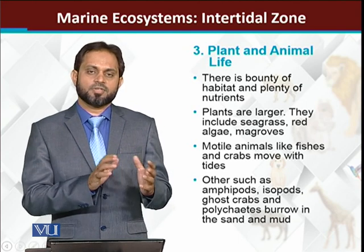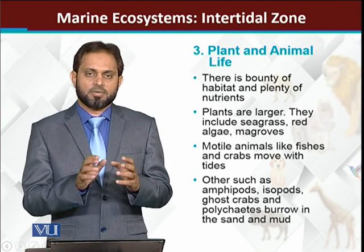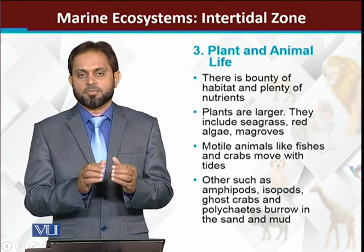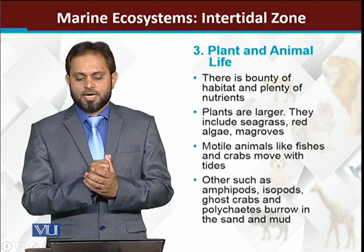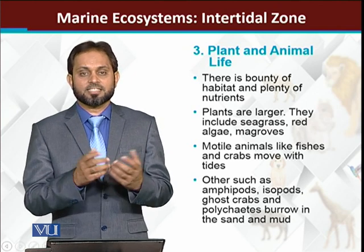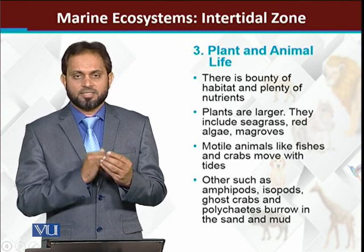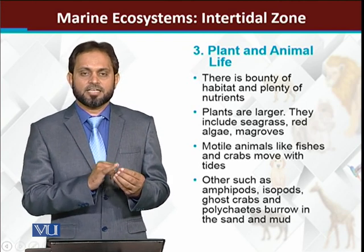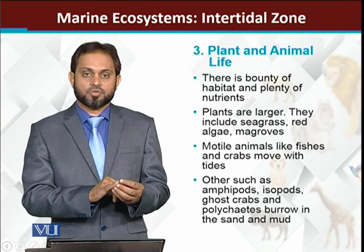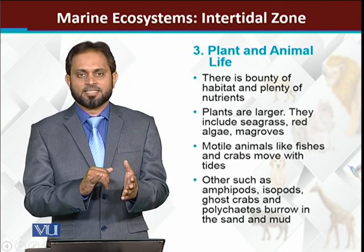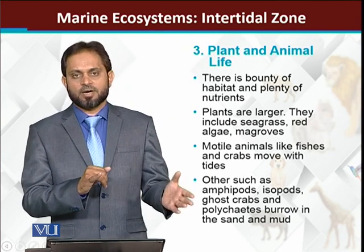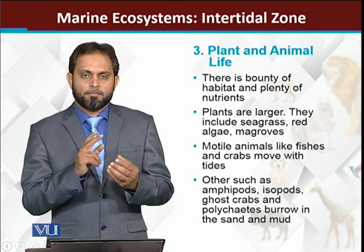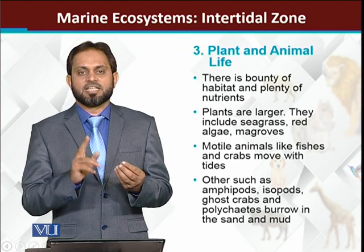Despite all these different types of constraints, there is the highest number of plants and animals present in this zone. Why is there such a high number? Number one: nutrients are abundant. In this area, nutrients are found in abundance because the terrestrial environment interacts here, making terrestrial nutrients available in this zone. Regarding plants, different types of algae are present.